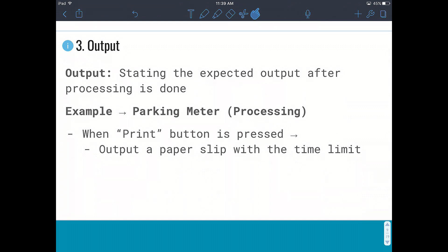So at output, we're stating the expected output after the processing is done. So for our parking meter, when the print button is pressed, we output a paperclip with a time limit.